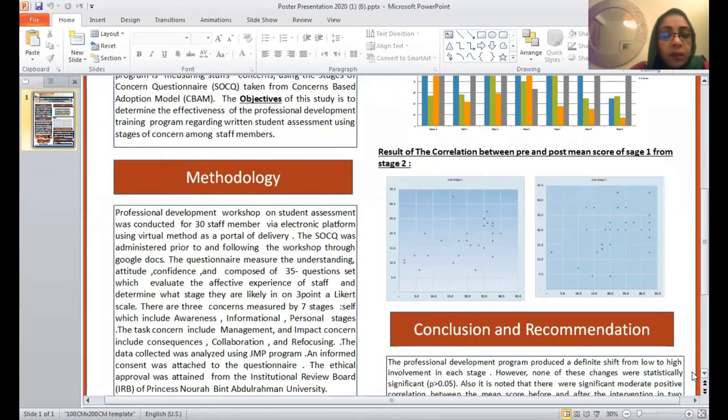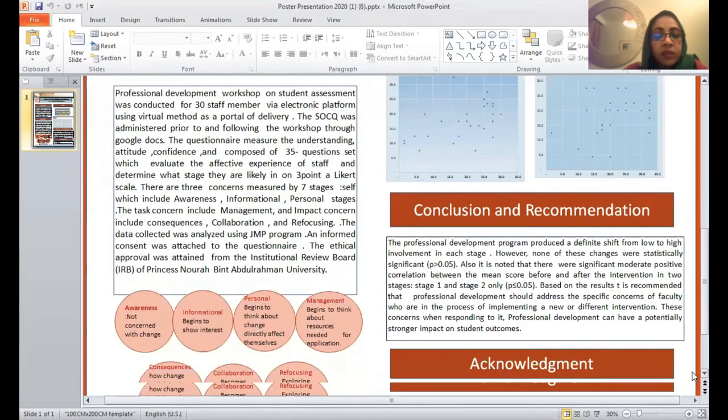There are three concerns measured by seven stages: Self, which includes awareness, information, and personal stages; Task concern, which includes management; and Impact concern, which includes consequence, collaboration, and refocusing. The data was analyzed using the JUMP program and informed consent was attached to the questionnaire. The ethical approval was obtained from the Institutional Review Board of Princess Nourah Bint Abdulrahman University.